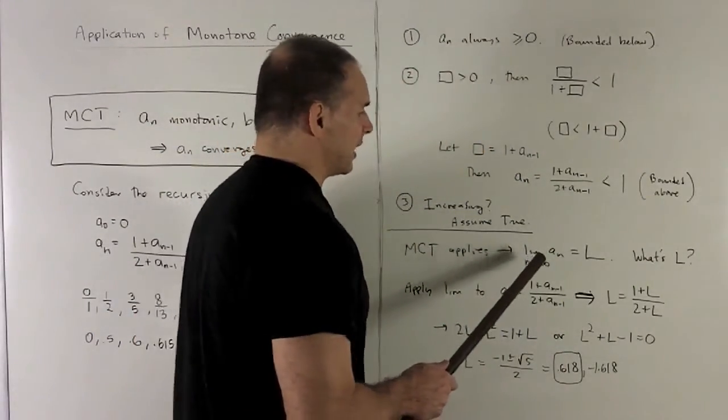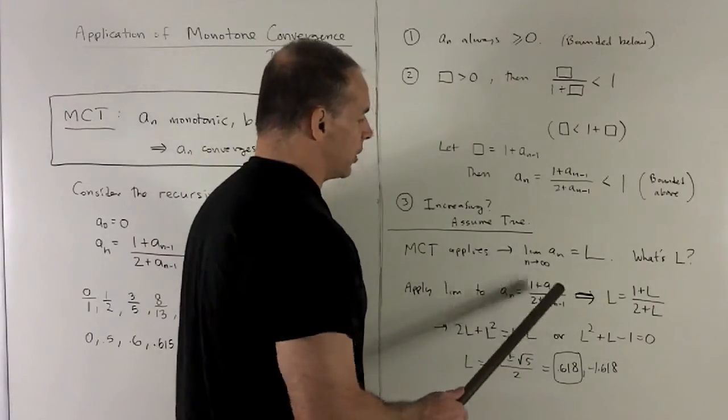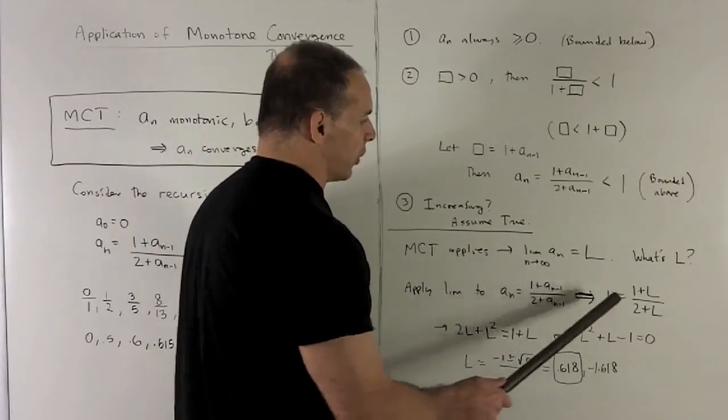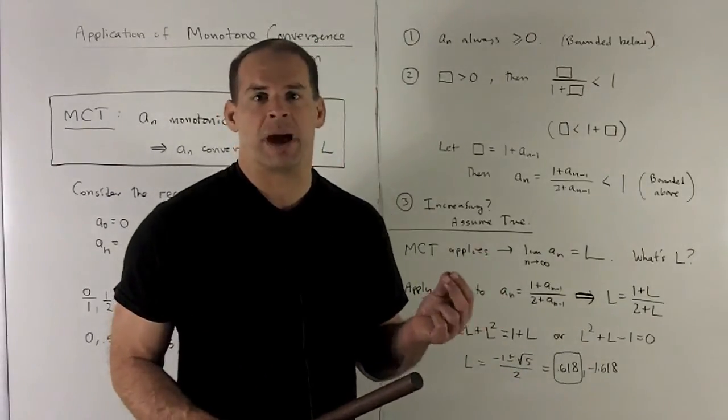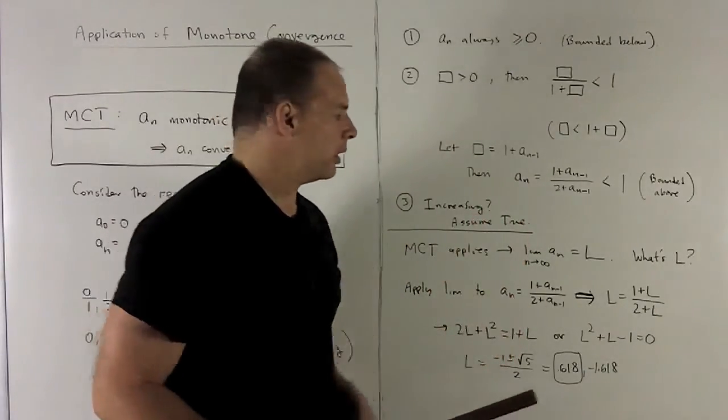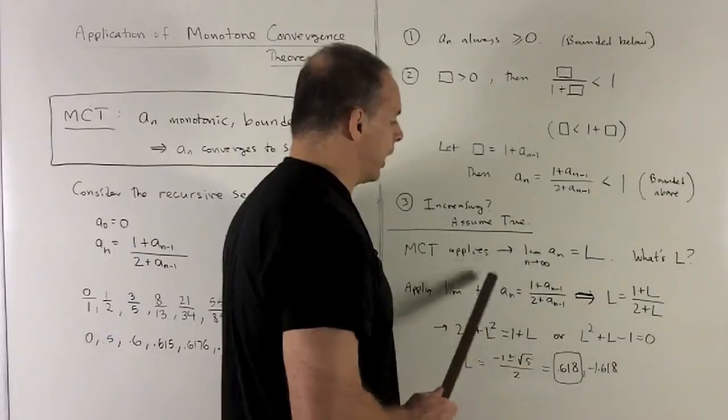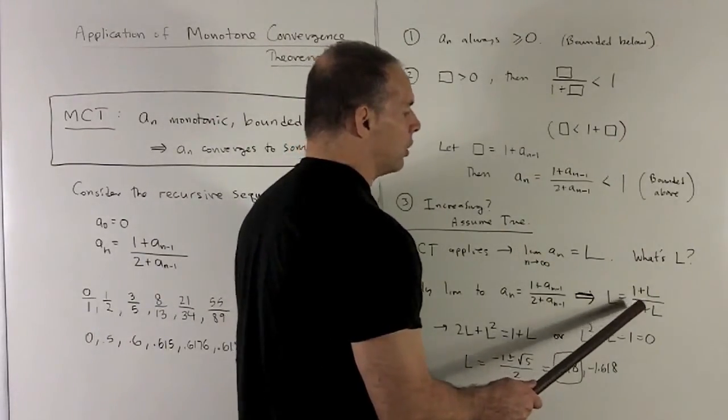So we do that. I say the limit equals L. We apply limit to this thing. And notice, limit of a_n is going to go to L. Limit of a_(n-1), that's just a_n shifted by 1 position-wise, so that still has to go to L also. So what happens is I just take this equation and convert it to L equals 1 plus L over 2 plus L.